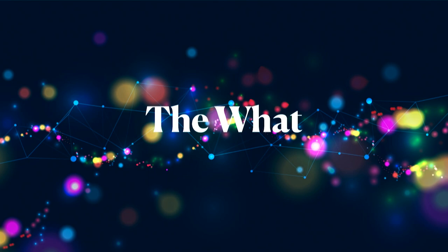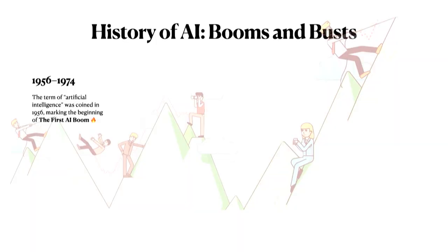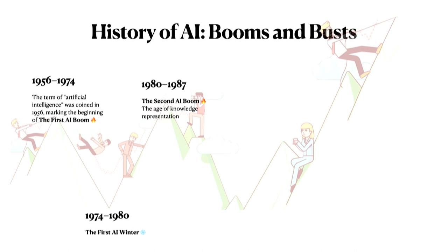Starting with the 'what' — just quickly scanning the audience, I see a lot of familiar faces, friends, and colleagues, so this part may be a bit basic. In 1956 at the Dartmouth College meeting, the term artificial intelligence was coined, beginning the first AI boom. By 1974, it hit the first AI winter. Starting 1980 came the second AI boom, when philosophers, psychologists, linguists, and dreamers worked together to build expert systems — the age of knowledge representation. By 1987 came the second AI winter.